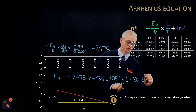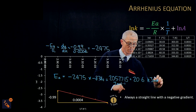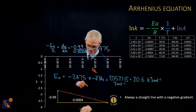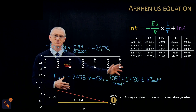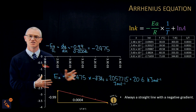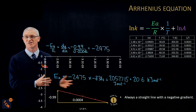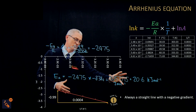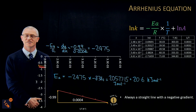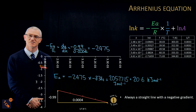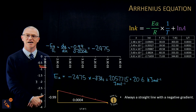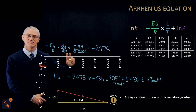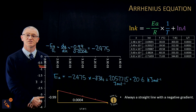So that is how you take data, turn it into natural log of k and 1/T, plot it on a graph, find the difference in y over the difference in x to get the gradient, then multiply by the gas constant to get the activation energy for the reaction.